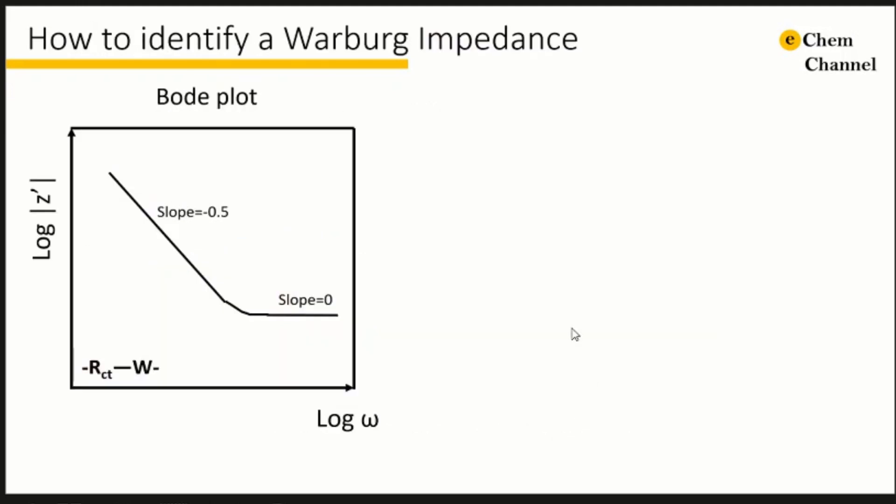So sometimes you can observe the 45 degrees easily in the Nyquist plot, but sometimes a Warburg impedance element can be difficult to recognize because it is nearly always associated with a charge transfer resistance and a double layer capacitance. This may hide the attributes of the Warburg impedance. Here are two ways that may assist you identify the Warburg impedance.